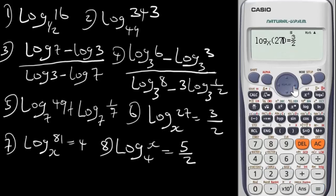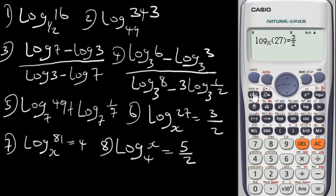Once you are done inputting that value, do not press equals — it will just show you zero. Instead, press Shift then Calc. When you get there, you assign your x a value. I recommend 0 or 1. Let's assign x to be 0, then press equals to solve it.